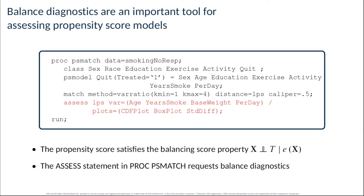Matching is a popular method in part because it makes use of an intuitive notion of balance. Balance captures the idea that if you have two groups at the start of a study, and the groups differ systematically only in terms of the treatment assignment, then any difference you observe in the outcome at the end of the study can be attributed to the treatment with a valid causal interpretation. Matching methods therefore attempt to create from the input data set a new matched data set where the distribution of the confounding variables is comparable between the two treatment conditions.